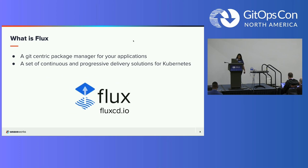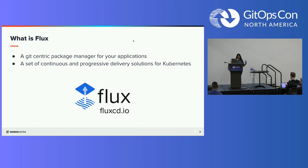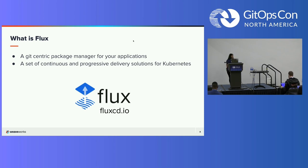Now we'll get into what is Flux. Flux is a Git-centric package manager for your applications — but Git isn't the only source you can use with Flux. It provides a set of continuous and progressive delivery solutions for Kubernetes; it was really created with Kubernetes in mind. At the core of it, it is continuously monitoring your version control system and applies the desired state that's been expressed declaratively there. You don't have to worry about configuration drift because it reconciles on a set schedule — if things have gotten out of sync, it will set them back to the desired state.